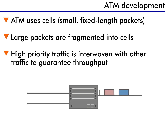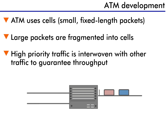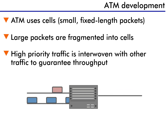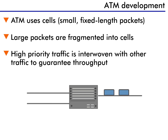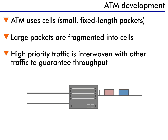As you can see in this diagram, one large packet is fragmented into several smaller packets called cells. When the group of low-priority cells arrives at the switch, they are processed one at a time. When the high-priority cell arrives, the switch is able to interweave this cell with the previous traffic, so there is only minimum delay.